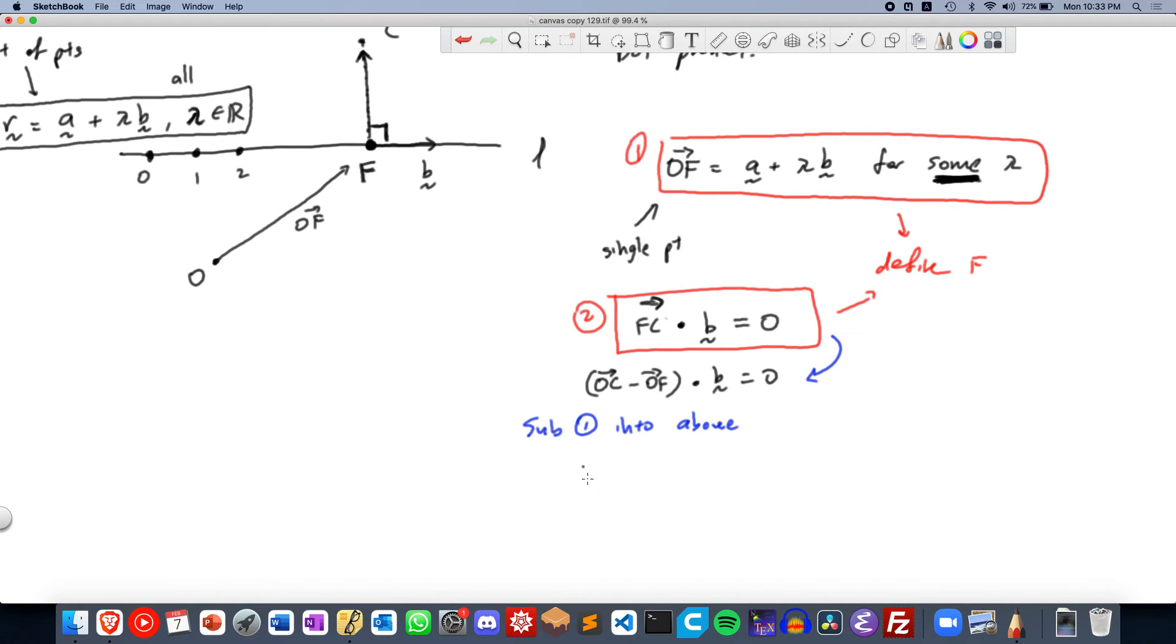So that will give us OC, which we are given, right, which we know from the question, minus A plus lambda B dot B equals to 0.